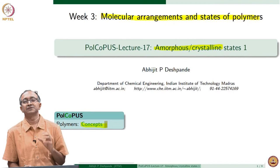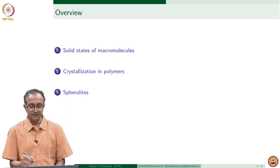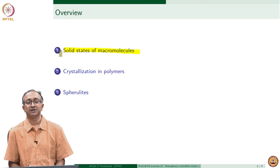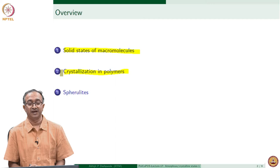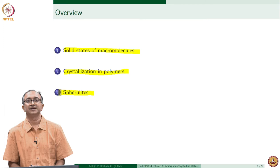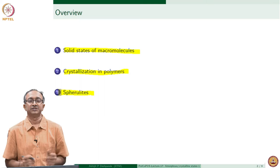Our focus will be on learning concepts related to the description of solid states. We will first quickly review which amorphous and crystalline states are possible in macromolecules and what we mean when we say crystallization in the case of polymers. The specific arrangement of crystallites in polymers, quite often observed in synthetic polymers and the plastics we see around us, is spherulites.